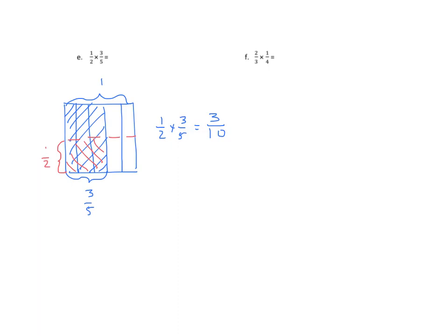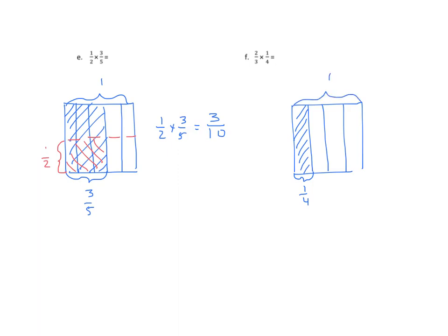Let's do one last example. We have two-thirds of one-fourth. Bracket and shade one-fourth. Now for two-thirds, partition it going horizontally into three equal parts and shade two of those three. We have two-thirds times one-fourth equals two out of twelve — two-twelfths — which is the same as one-sixth.